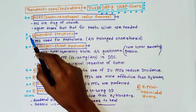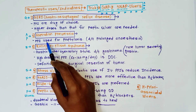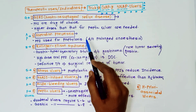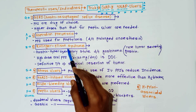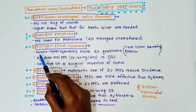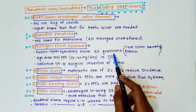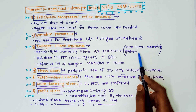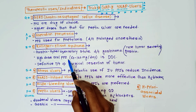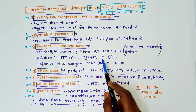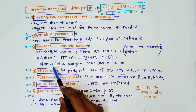A and P stands for aspiration pneumonia — proton pump inhibitors are used for prophylaxis in this case due to prolonged anesthesia. Z stands for Zollinger-Ellison syndrome, which is a gastric hypersecretory state due to gastrinoma — a rare tumor secreting gastrin. High-dose oral proton pump inhibitor, 60 to 120 mg per day, is the drug of choice, and the definitive treatment is surgical resection of the tumor.